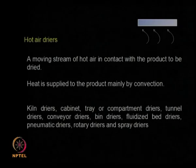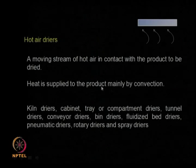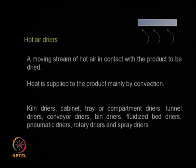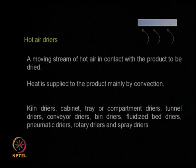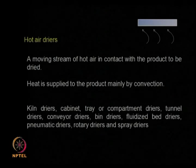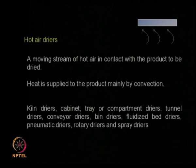Hot air dryers work because hot air flows past the material — heat transfer is through convection only. There are many types: cement kilns, cabinet dryers, tray or compartment dryers, tunnel dryers, conveyor dryers, bin dryers, fluidized bed dryers, pneumatic dryers, rotary dryers, spray dryers — all based on hot air coming in contact with the solid, which carries the moisture away. There is no direct contact between the solid and the heating element. Convection means factors like flow rate, turbulence, and temperature difference all govern the rate of heat removal.